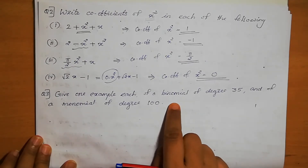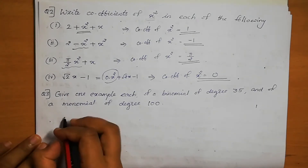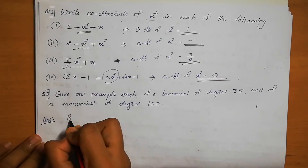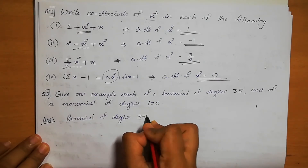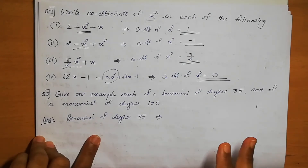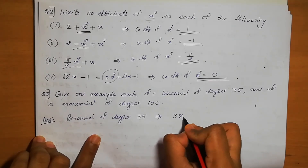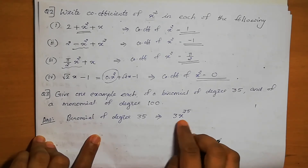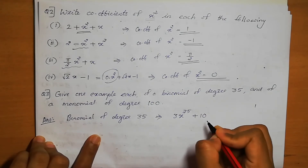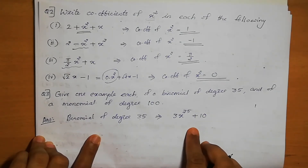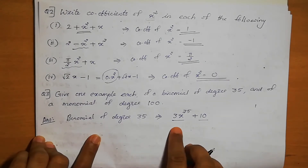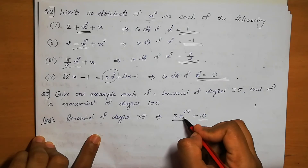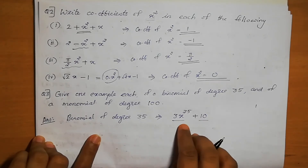First, we need to write a binomial of degree 35. A binomial must have exactly two terms. So we can write 3x power 35 plus 10. This has two terms: 3x power 35 is the first term and 10 is the second term. The degree of x is 35, so this is a binomial of degree 35.